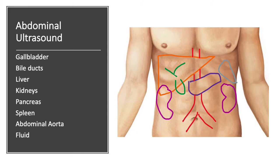Then there is the abdominal aorta, which is the major blood vessel running through the abdomen. It starts from the heart, travels through the chest and abdomen, and then splits into branches which run down the legs. We are assessing for any abnormal dilatation of this blood vessel called an aneurysm, because too much dilatation of the abdominal aorta can make it prone to rupture. This is also assessed with ultrasound during your scan.